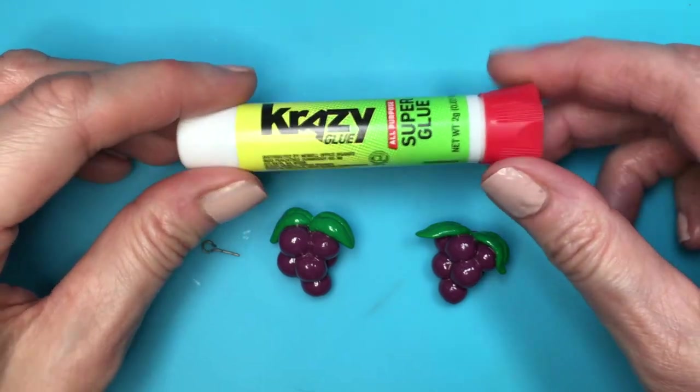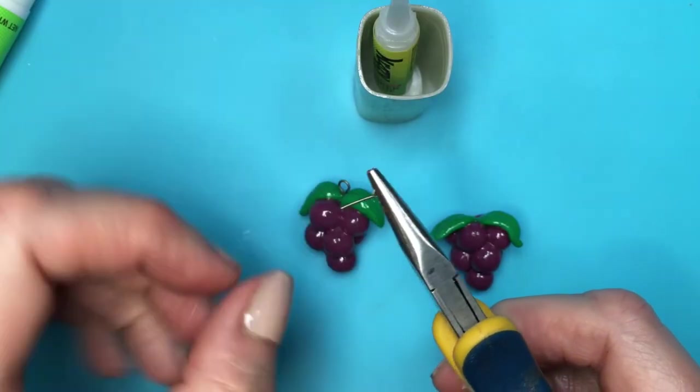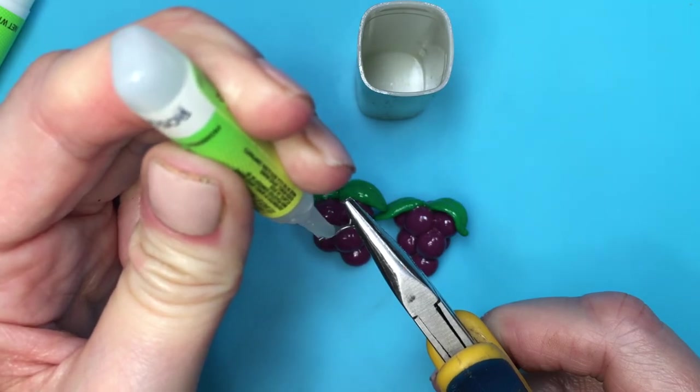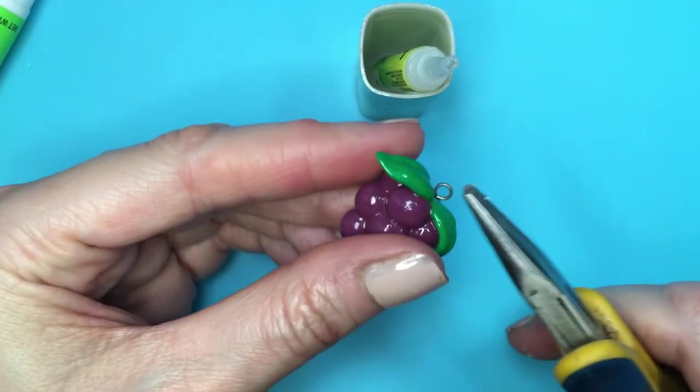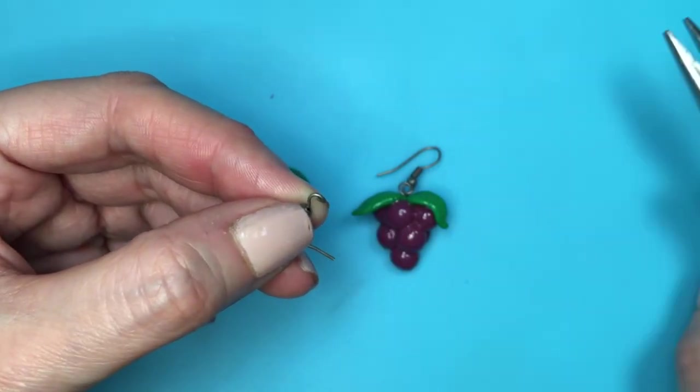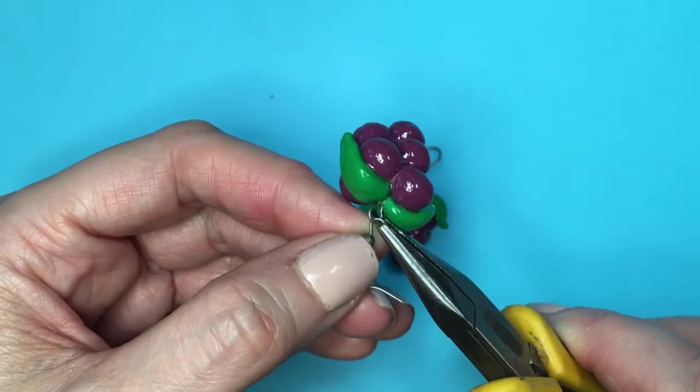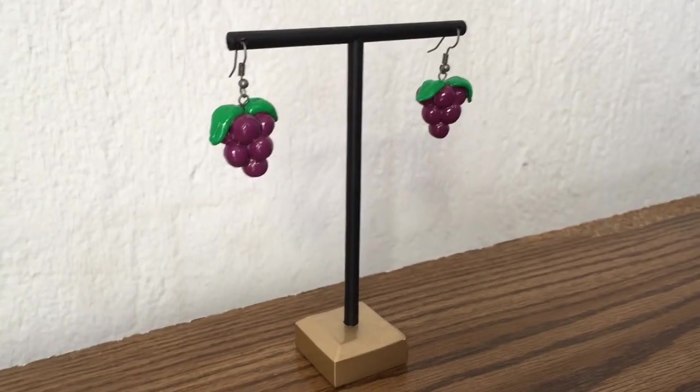I'm going to be gluing those with my pliers so that the eye pin is front facing to myself and also just choosing the cuter part to be front facing. Then I'm going to be opening my other ear wires, placing my eye pins through that, and then just closing them.